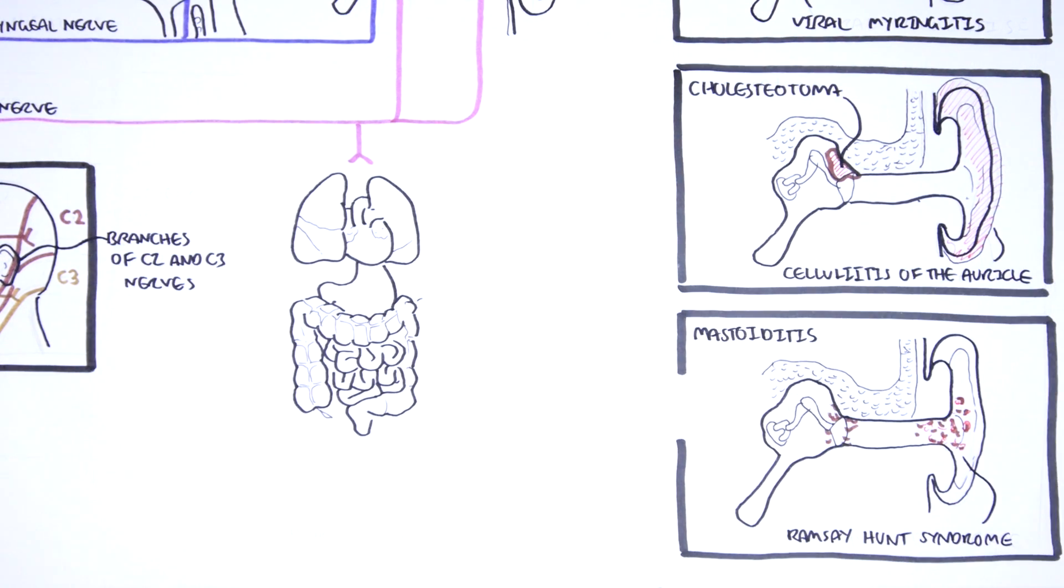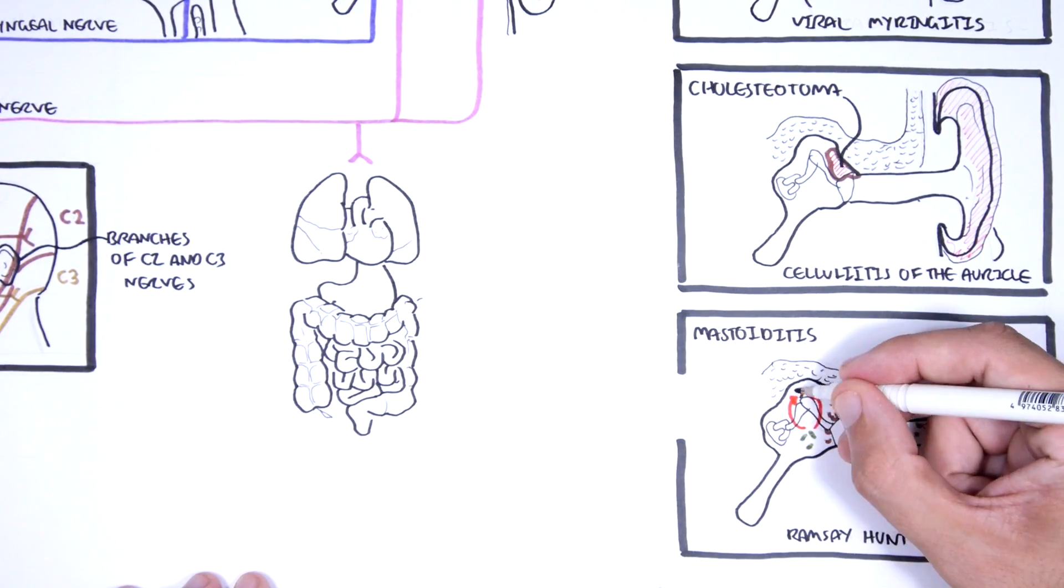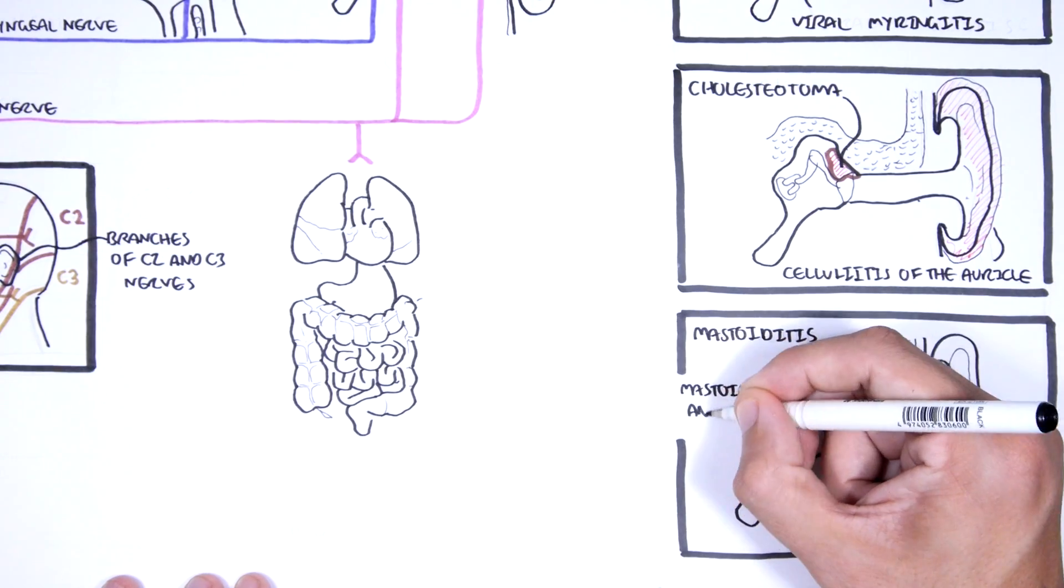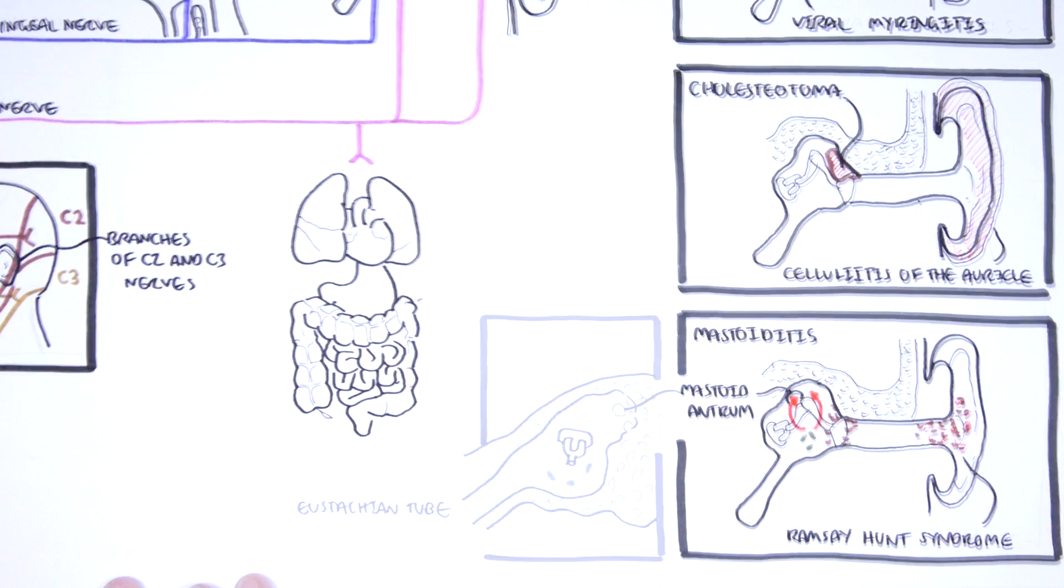Mastoiditis is a complication of acute otitis media, and it's essentially infection of the mastoid air cells. The infection can actually spread to the mastoid air cells through the mastoid antrum.